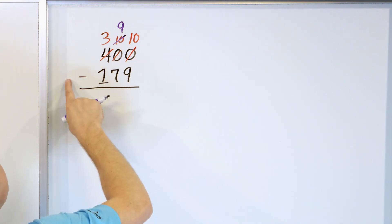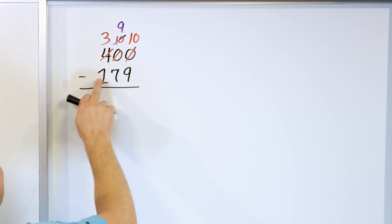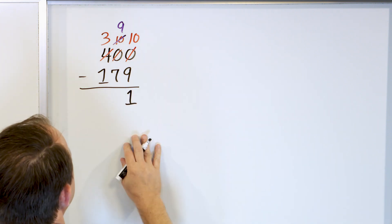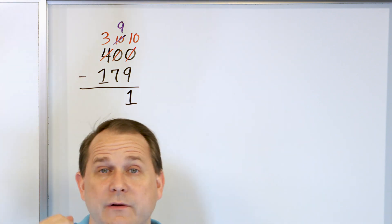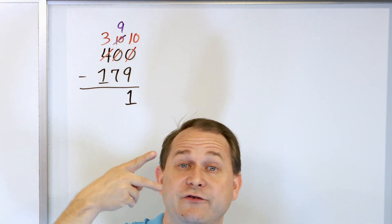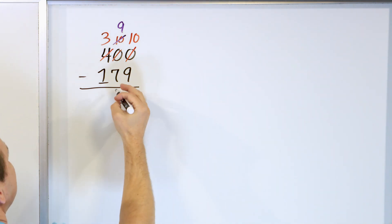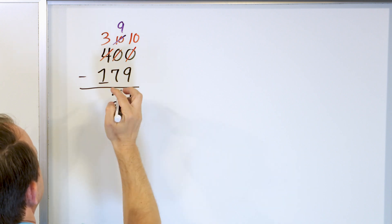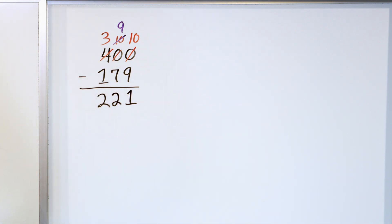Now what is 10 minus 9? If you start with 10 marbles and take away 9 of them, you only have one left. What is 9 minus 7? Start with 9 and go down: 8, 7, 6, 5, 4, 3, 2. We land on 2, so 9 minus 7 is 2. What is 3 minus 1? That's also 2. So we get an answer of 221.